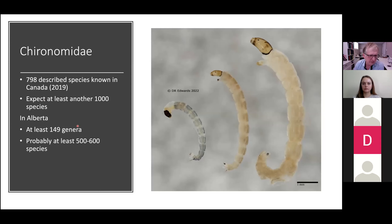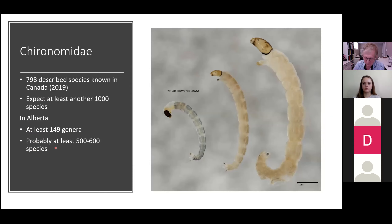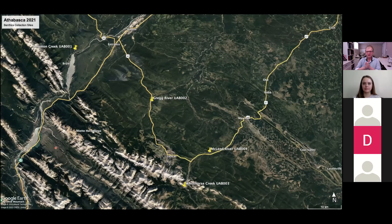Diane and I did a deep dive, and we'd love comments from Alex and Cheryl on this one later. At least 149 genera are known in the province. The catalogs are so out of date you might as well throw them out the window. Rob Hinchcliffe estimated probably at least 500 to 600 species in the province — and with 149 genera, imagine how many species that could be.